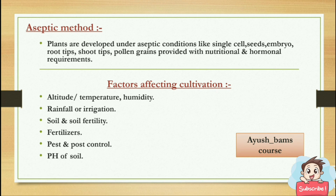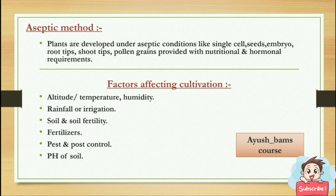Factors affecting cultivation include: altitude or temperature, humidity, rainfall or irrigation, soil and its fertility, fertilizers used in crops and fields, pest and pest control, and pH of the soil.